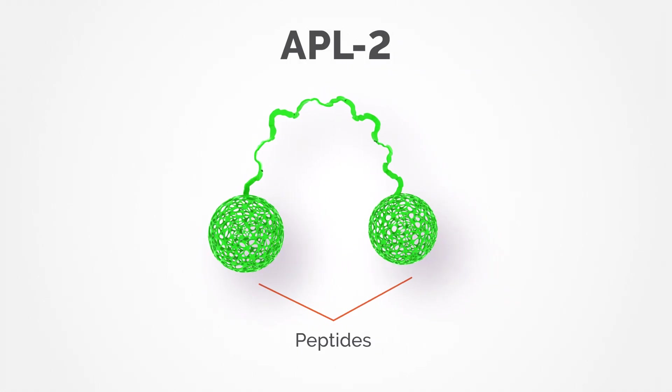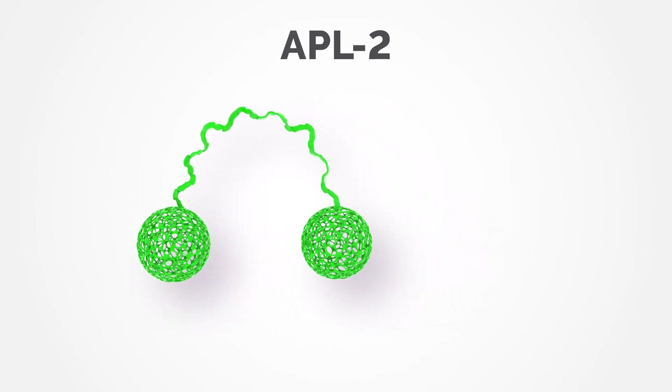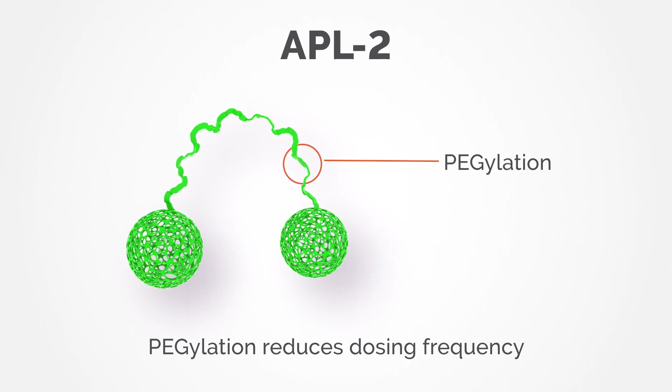APL2 is a pegylated cyclic peptide inhibitor of complement C3. Pegylation helps keep APL2 in the body longer, reducing dosing frequency.